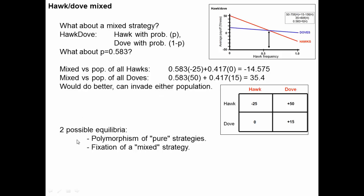There are two possible equilibria we may get. First, a polymorphism of pure strategies — a population where some individuals are hawks and some are doves at a certain frequency. Or second, the fixation of a mixed strategy — invasion by an individual that is sometimes a hawk and sometimes a dove, resulting in a population where everybody acts like a hawk 58.3% of the time and like a dove 41.7% of the time.